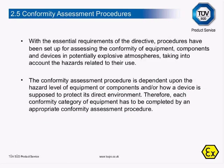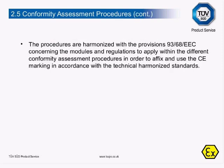The conformity assessment procedures. With the initial requirements for the directive, essential requirements have been set up for assessing the conformity of equipment, components and devices in potentially explosive atmospheres, taking into account the hazards related to their use. Conformity assessment procedures depend upon the hazard level of equipment or components, or how a device is supposed to protect its direct environment. Each conformity category of equipment must be completed by an appropriate conformity assessment procedure. The procedures are harmonised with Directive 93/68/EEC concerning modules and regulations to apply within the different conformity assessment procedures in order to affix and use the CE marking in accordance with technical harmonised standards.